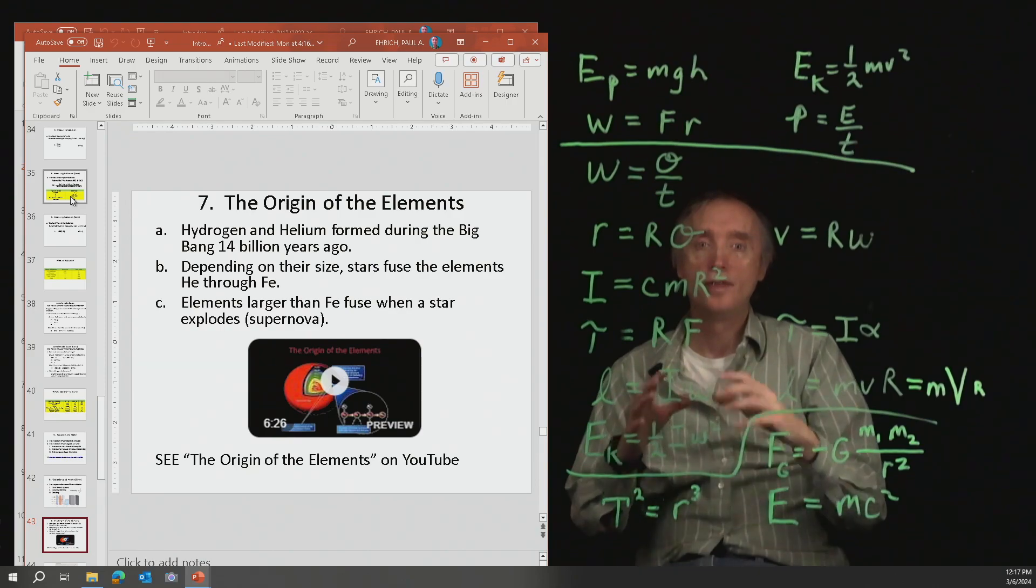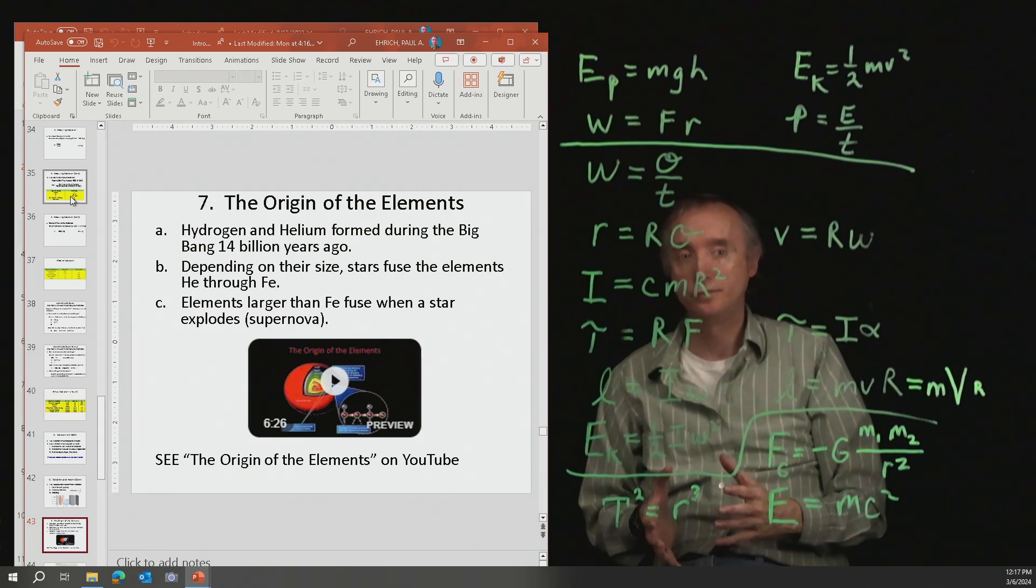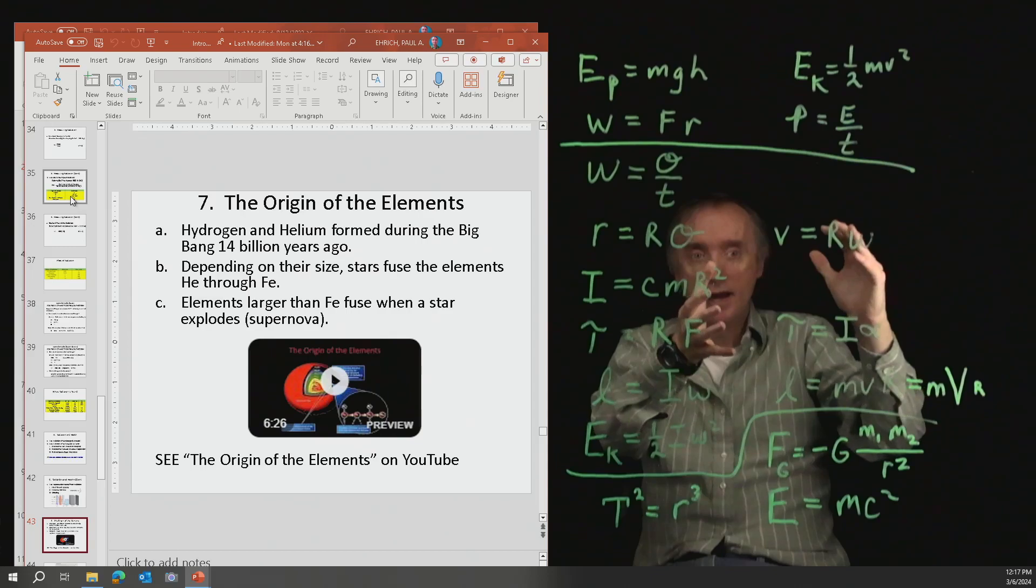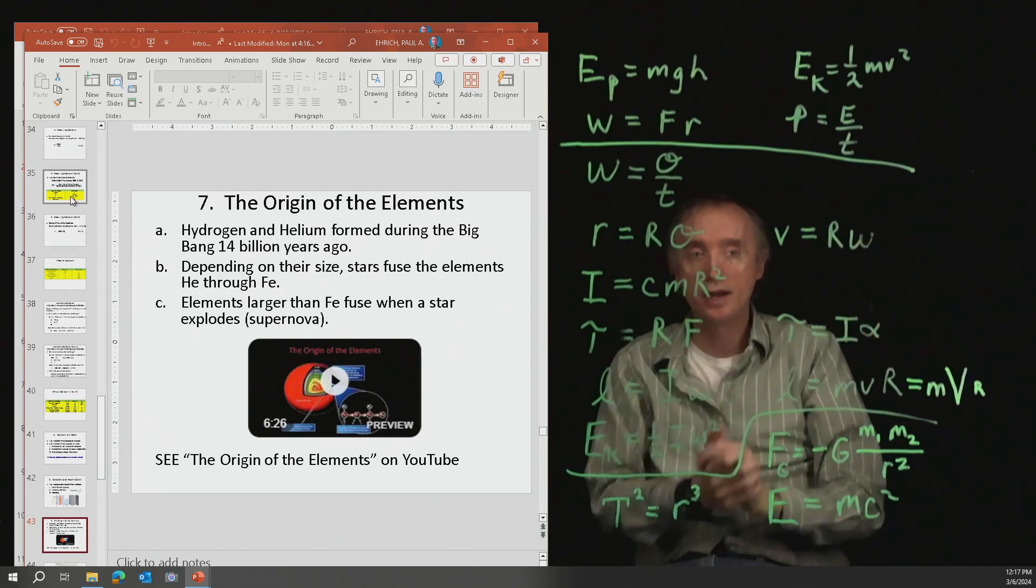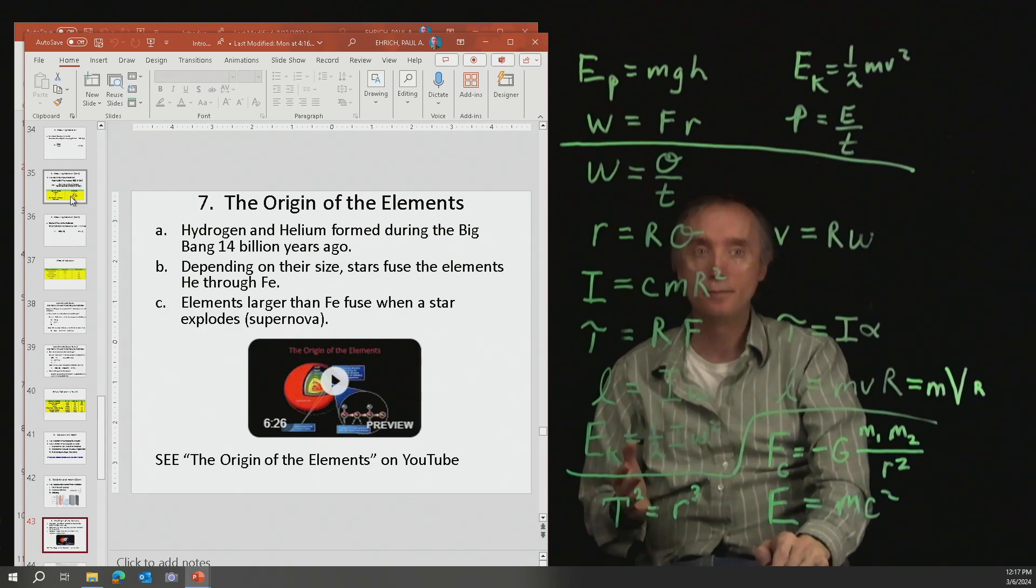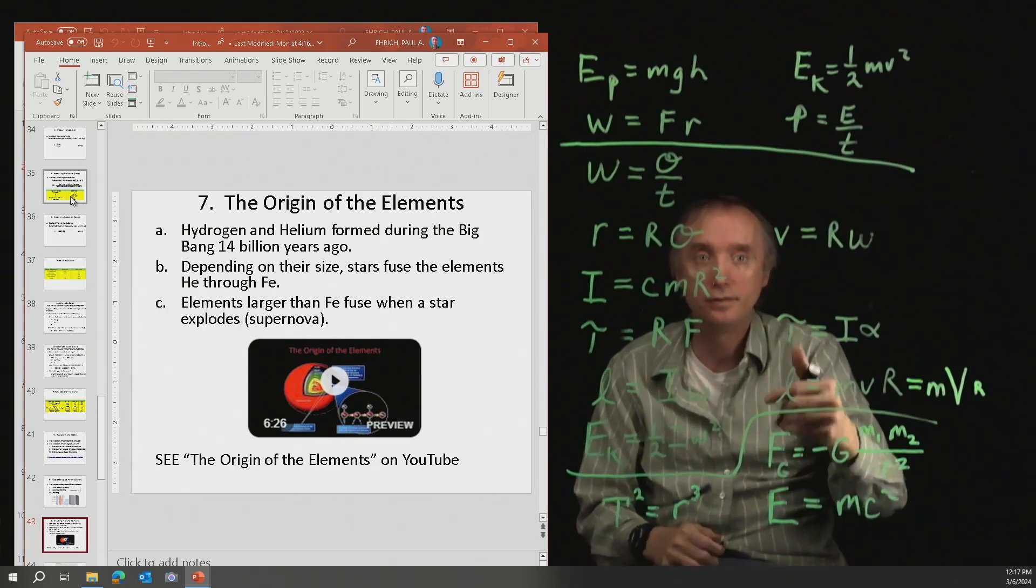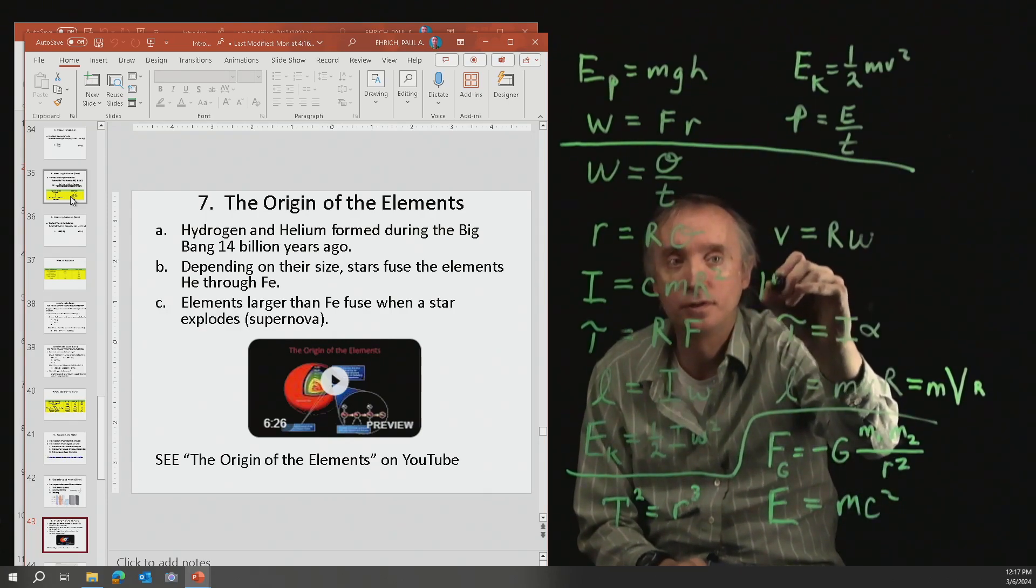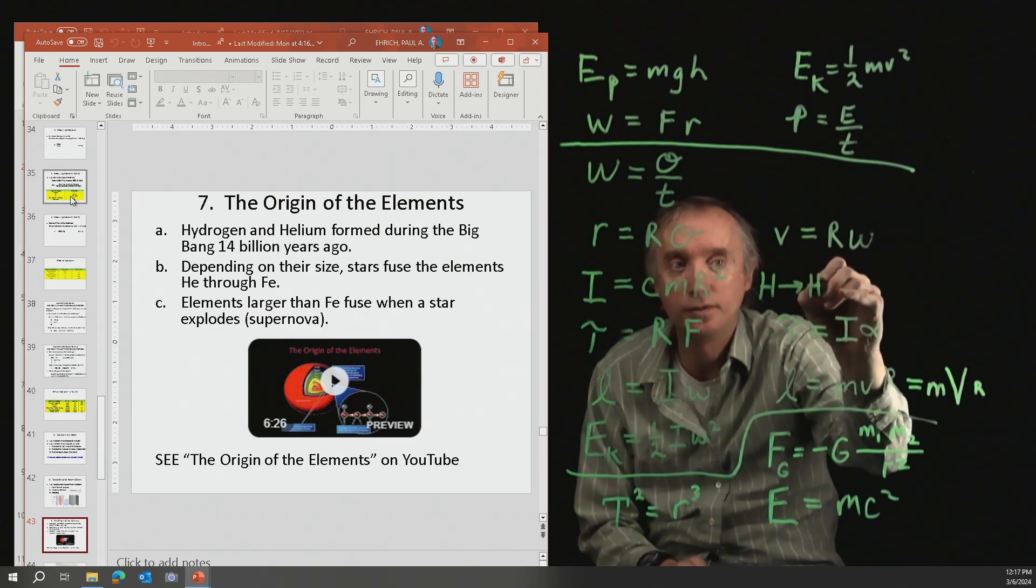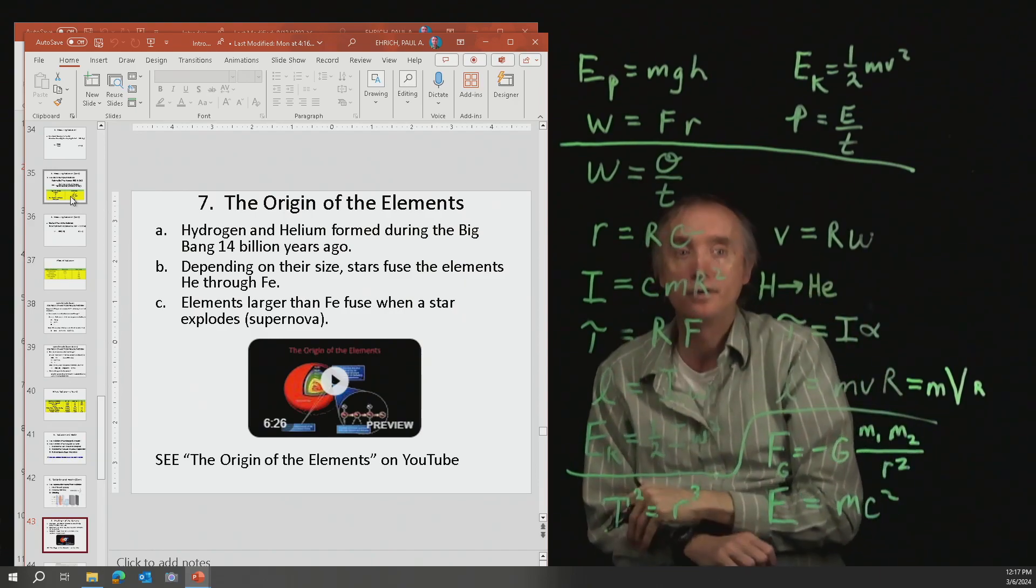Secondly, that hydrogen and helium became the fuel for stars. The hydrogen and helium was floating around. It started to collapse because of gravity and started to heat up. Once it reached a certain temperature, then hydrogen started to be converted into helium through nuclear fusion.